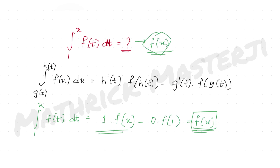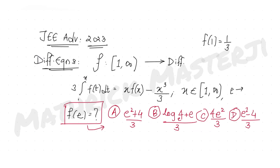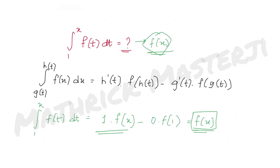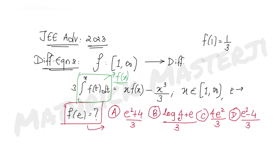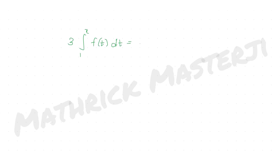Now I have the derivative of the integral as f(x). I take the original expression — 3 times ∫₁ˣ f(t) dt = x·f(x) − x³/3 — and differentiate both sides with respect to x. The left side becomes 3·f(x). For the right side, applying the product rule to x·f(x) gives x·f′(x) + f(x), and the derivative of x³/3 gives x².